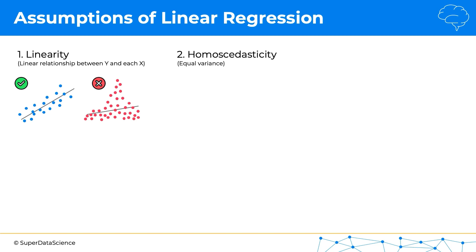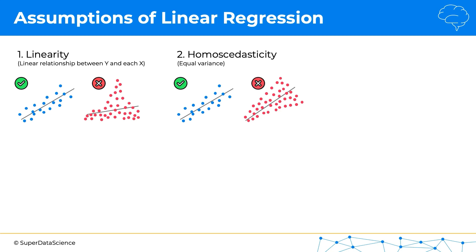The second assumption is homoscedasticity. And even though it sounds like a complex term, it actually simply means equal variance, meaning that you don't want to see a cone-type shape on your chart — whether an increasing cone or a decreasing cone — which would mean that variance is dependent on the independent variable. So in this case, we wouldn't use a linear regression either.